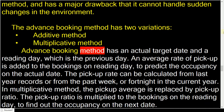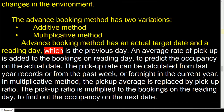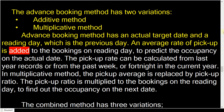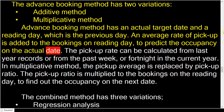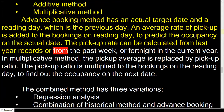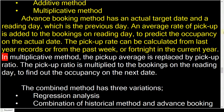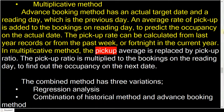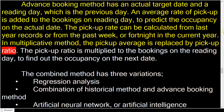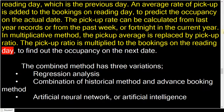The advanced booking method has an actual target date and a reading day, which is the previous day. An average rate of pickup is added to the bookings on the reading day to predict the occupancy on the actual date. The pickup rate can be calculated from last year's records or from the past week or fortnight in the current year. In the multiplicative method, the pickup average is replaced by a pickup ratio, which is multiplied to the bookings on the reading day to find out the occupancy on the next date.